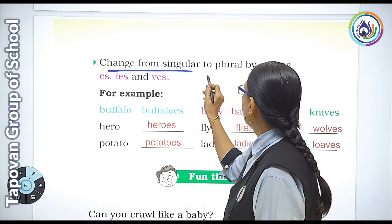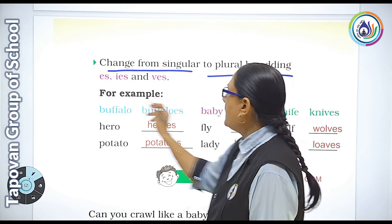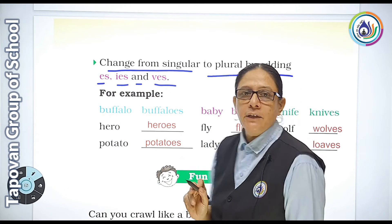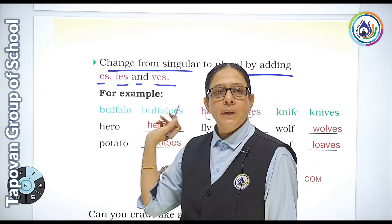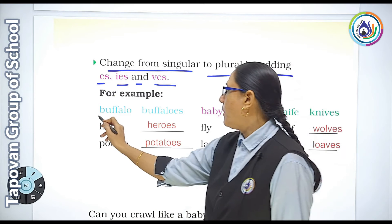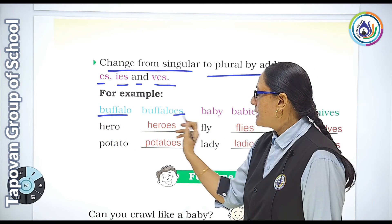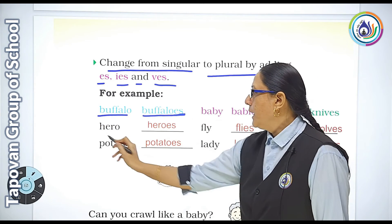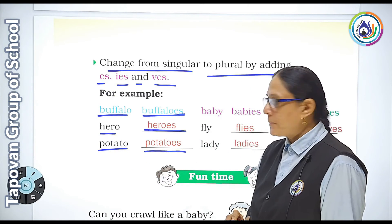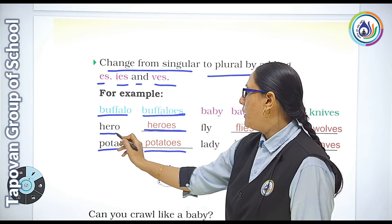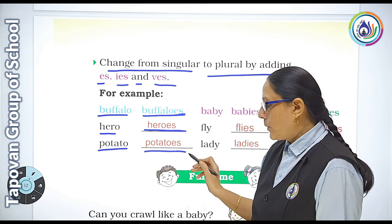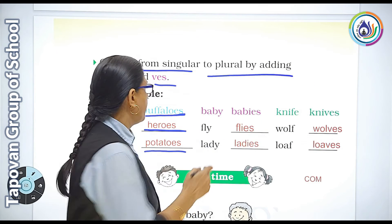Change the form from singular to plural by adding -es, -s, -ies, and -ves. For example: buffalo becomes buffaloes, hero becomes heroes, potato becomes potatoes — ek potato, anek potatoes.